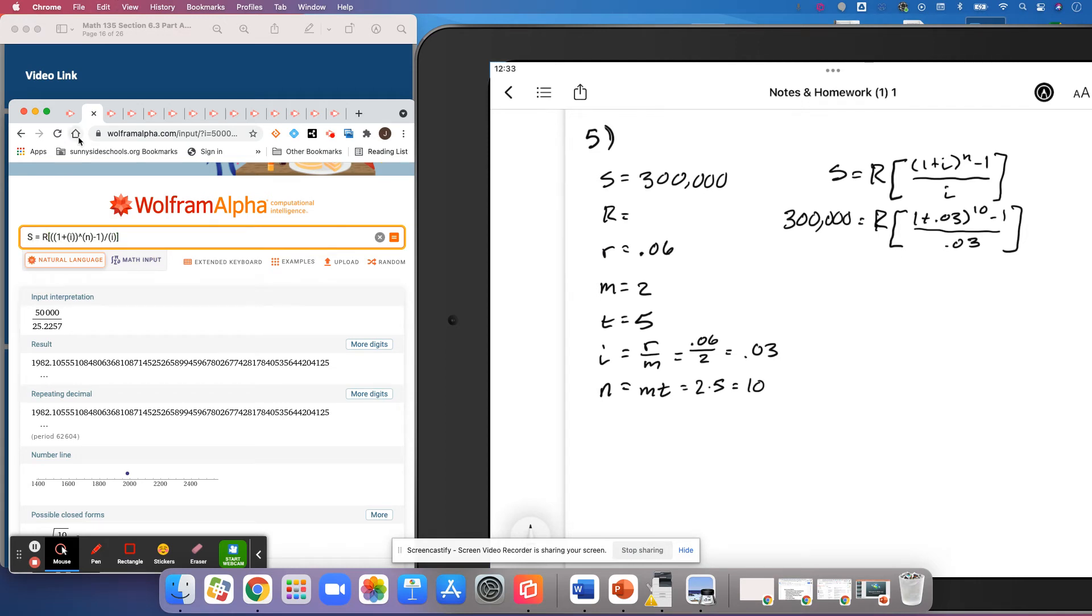And so $300,000. I already know that Wolfram is not going to like that R, so I'm changing it to an X right now. I is 0.03. N is 10. And then I again is 0.03.